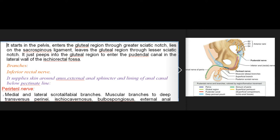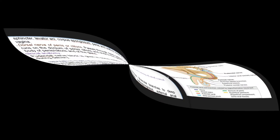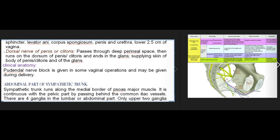Branches: (1) Inferior rectal nerve — supplies skin around anus, external anal sphincter, and lining of anal canal below the pectinate line. (2) Perineal nerve — medial and lateral scrotal/labial branches; muscular branches to deep transversus perinei, ischiocavernosus, bulbospongiosus, external anal sphincter, levator ani, corpus spongiosum, penis and urethra, and lower 2.5 cm of vagina.